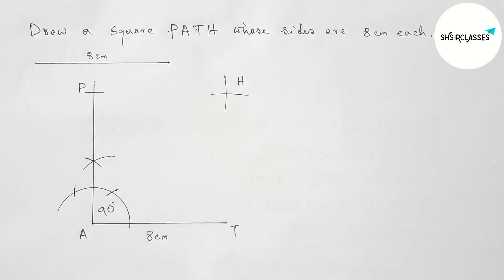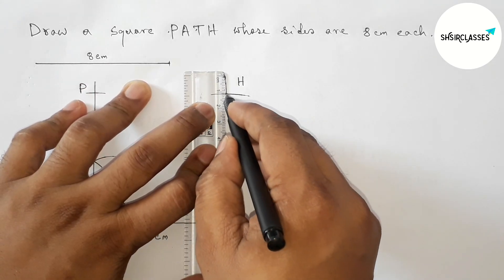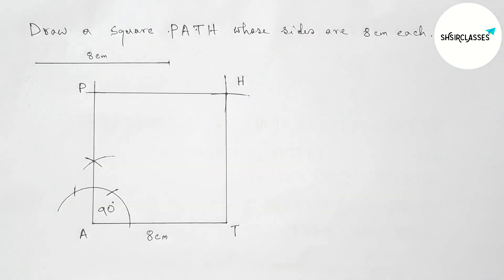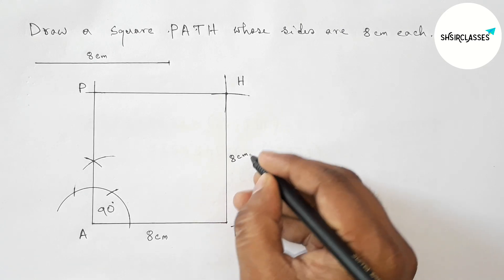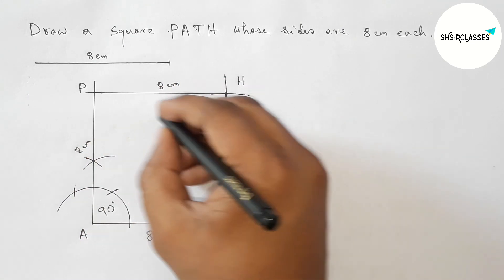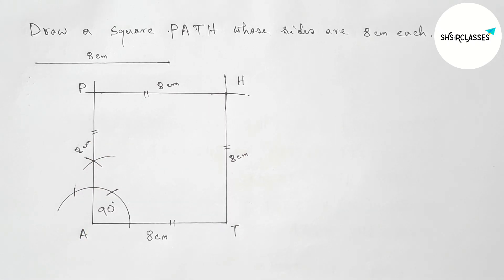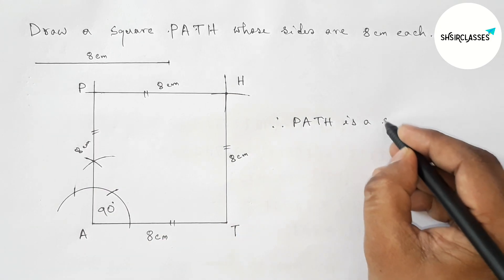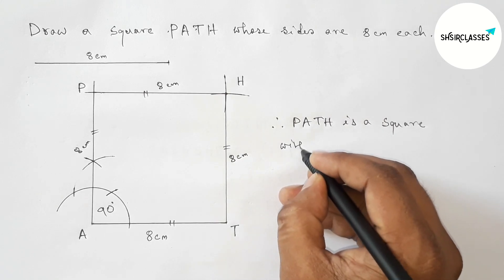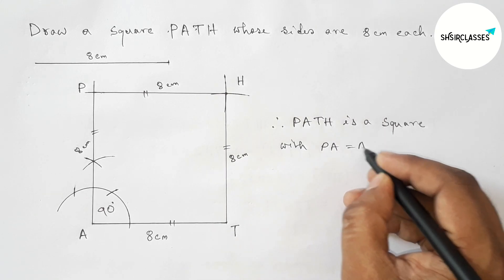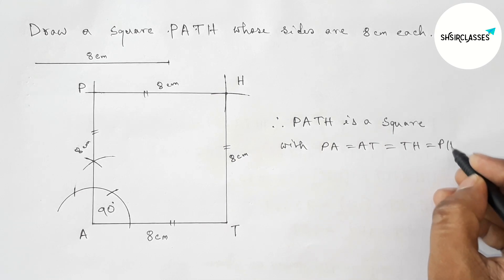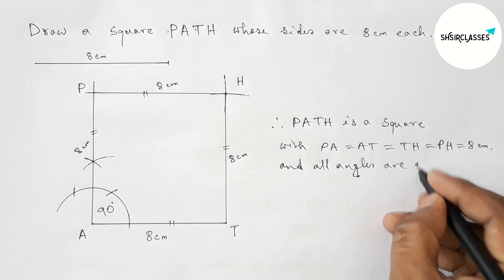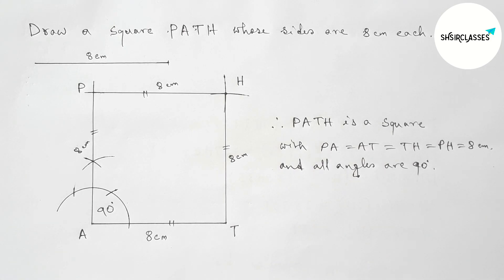Taking point P here and point H here — both at 8 cm. Now joining TH, then joining PH to complete our required square. All sides equal 8 centimeters. Therefore PATH is a square: PA equals AT equals TH equals HP equals 8 centimeters, and all angles are 90 degrees. That's all, thanks for watching, please share it.